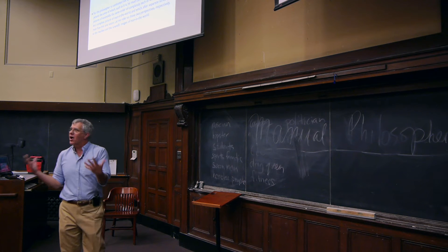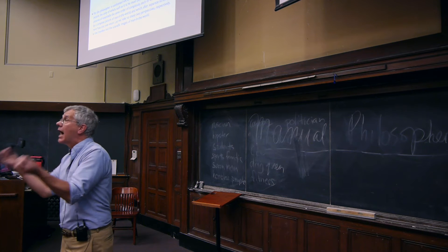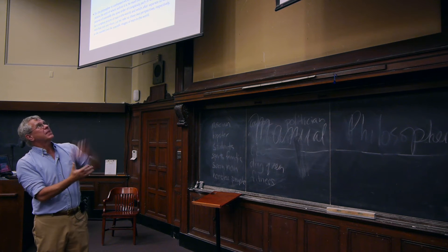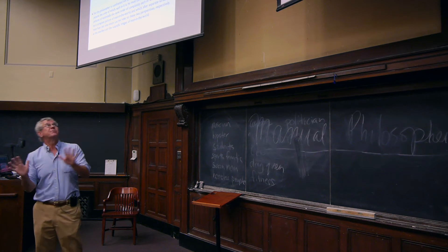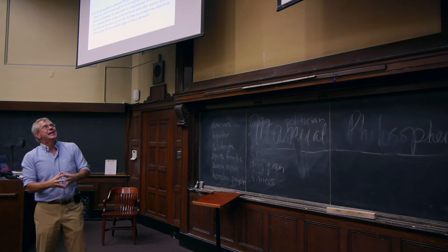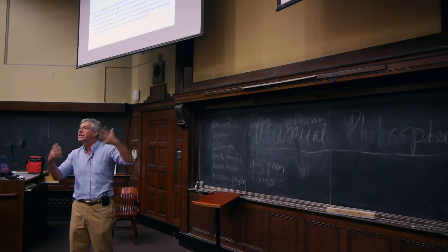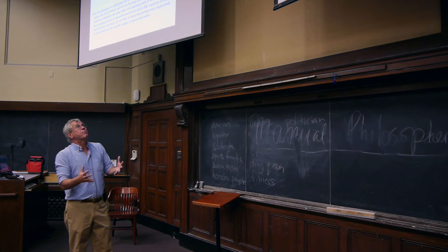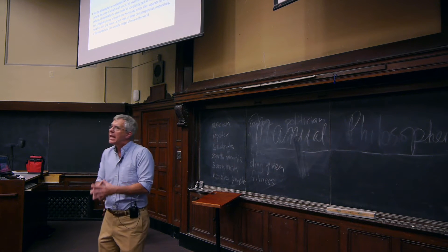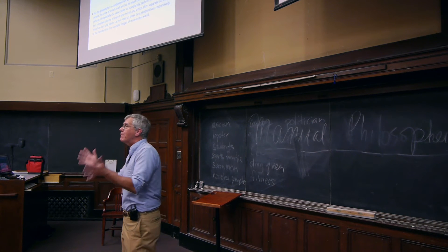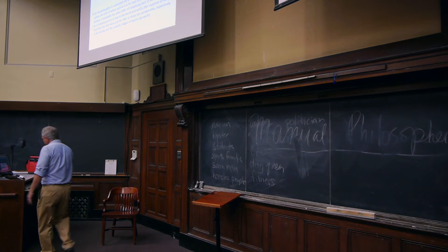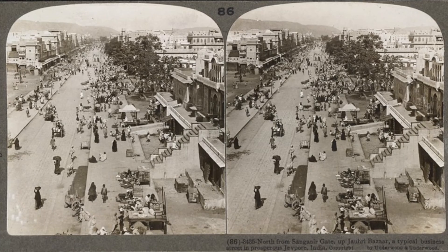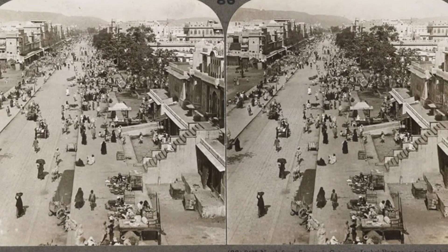Now, Sellars says, this really wouldn't be so hard, except for the fact that there are two different kinds of pictures, two different kinds of images, that we confront when we think about the world and ourselves. The philosopher is confronted, not by one complex, many-dimensional picture, the unity of which, such as it is, he must come to appreciate, but by two pictures of essentially the same order of complexity, each of which purports to be a complete picture of man and the world, and which, after separate scrutiny, he must fuse into one vision. Sellars calls these two perspectives the manifest image, and the scientific image. And the problem with philosophy, he says, it's really something like the problem with stereoscopic vision, how to combine two different images into a unified picture.